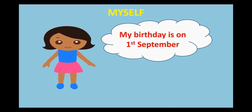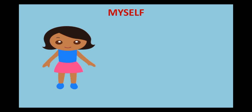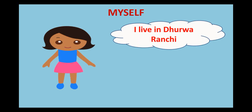Ritu says, my birthday is on 1st September. Ritu remembers her birth date — she was born on 1st September. How many of you can remember your birthdays? You all like to celebrate it. Ritu is also saying that she lives in Dhurva, Ranchi. So this is how Ritu has introduced herself — she has told us about herself.